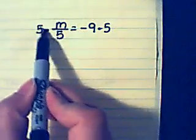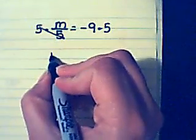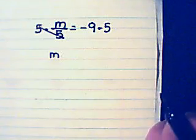Dividing by 5 and multiplying by 5 cancel each other out. So I have m on one side of my equation all by itself.